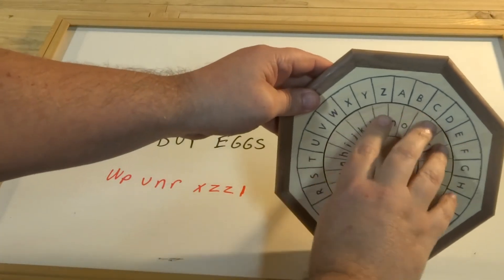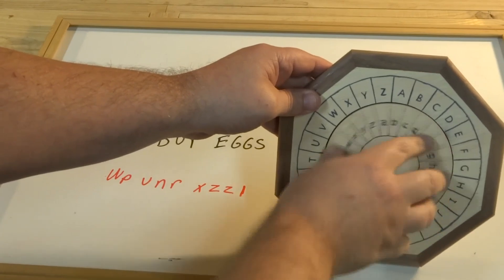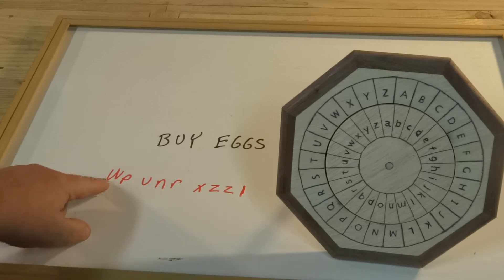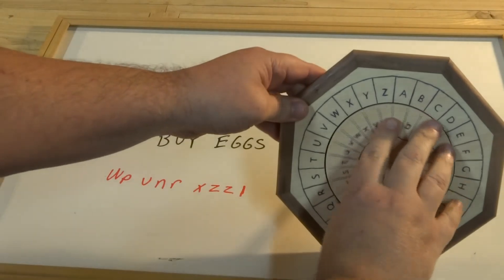Now suppose the person who got this message says, okay, what do I do with this? So they're going to look at it and say, alright, I see the capital W, the lowercase P, that I know is the index, that tells me how to set my wheel. So I will set it to WP again.